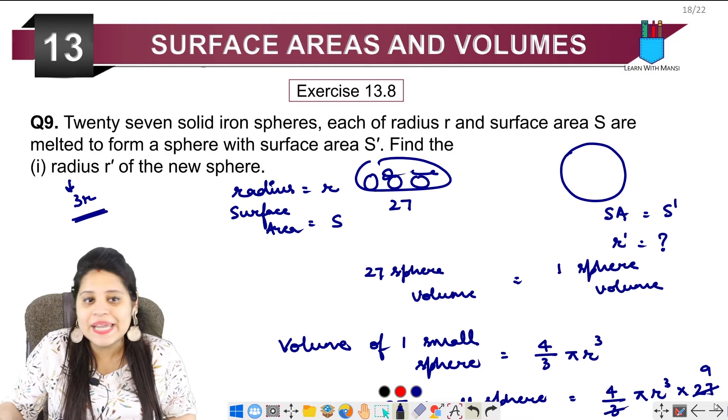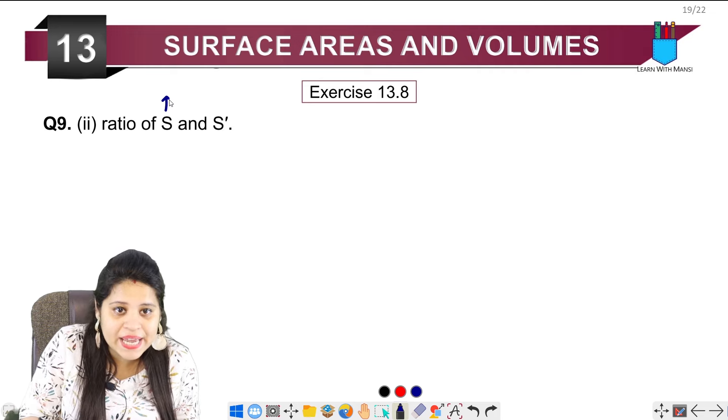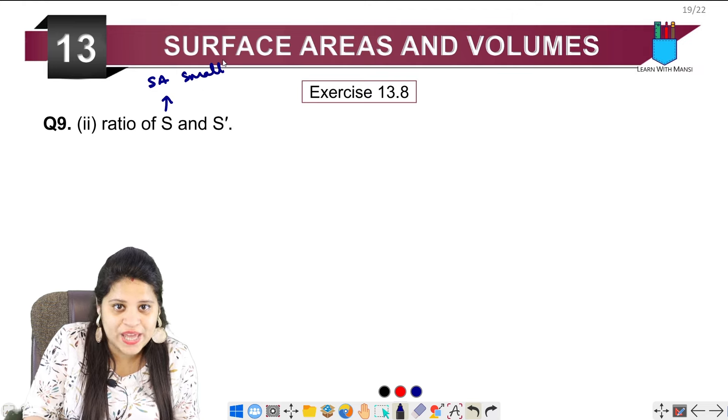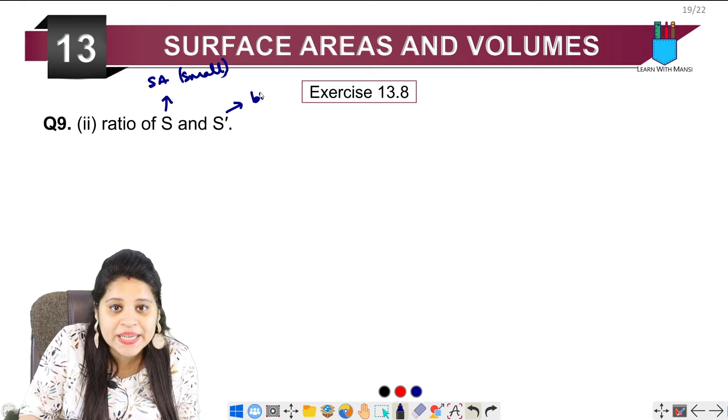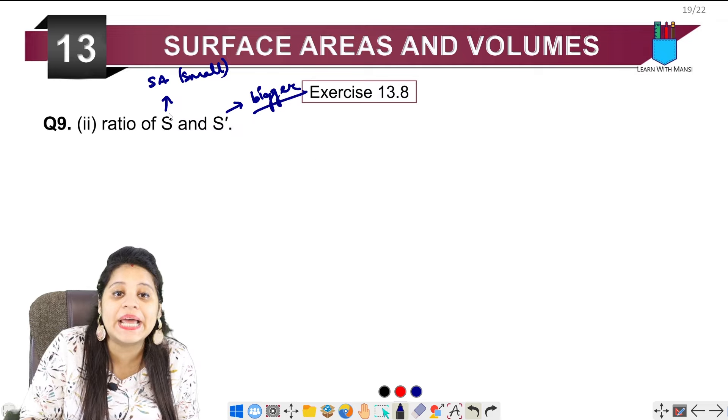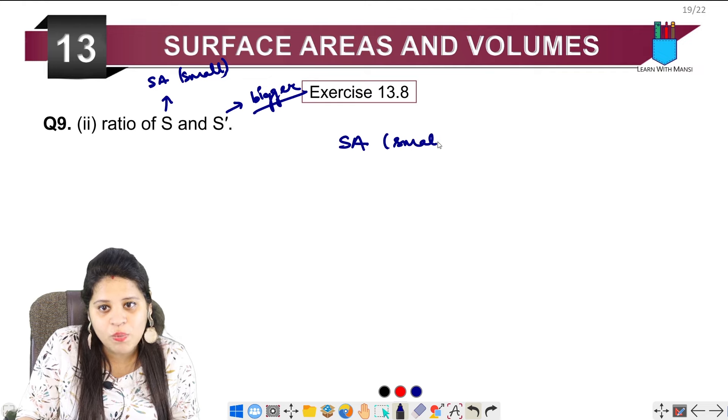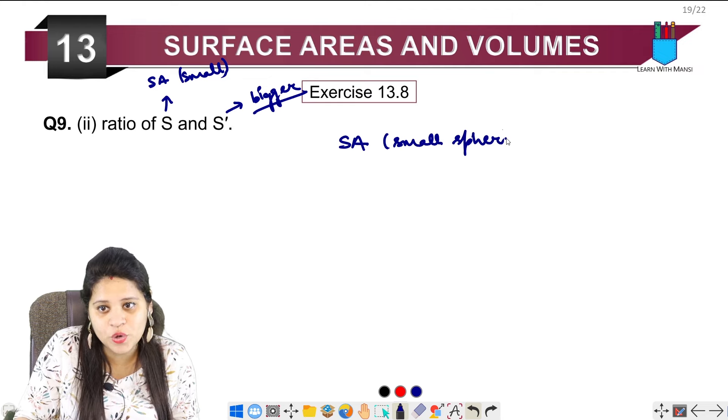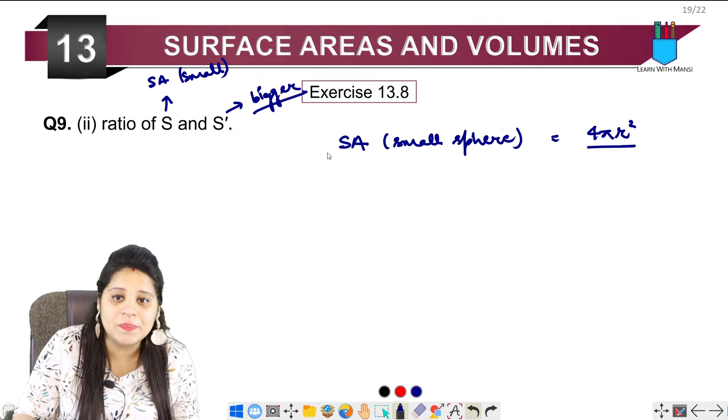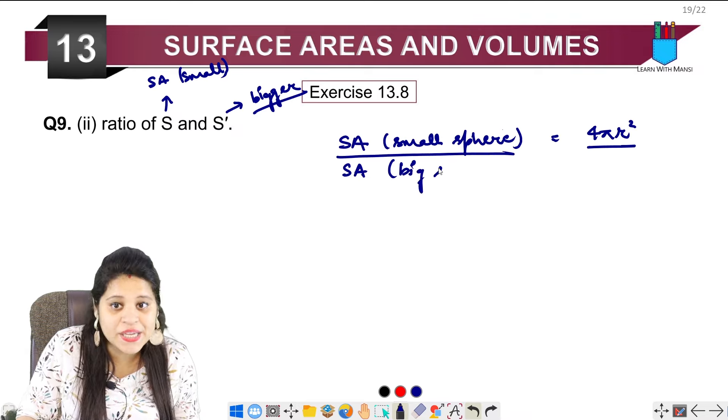Next, we will find the ratio of S and S dash. S means surface area of the small sphere, and S dash stands for the big sphere. The surface area of small sphere upon the surface area of bigger sphere.